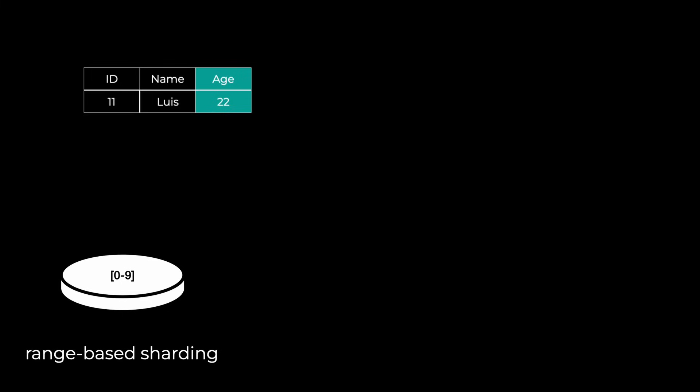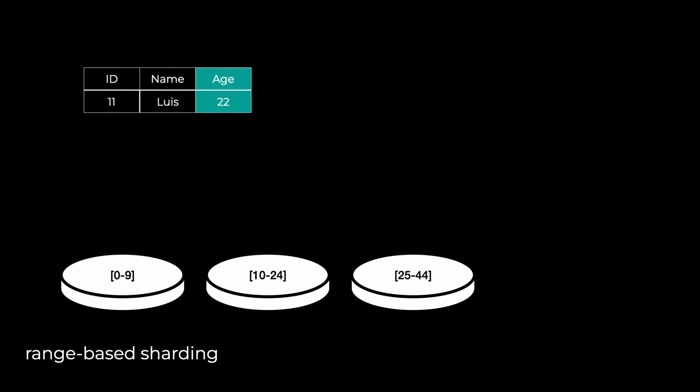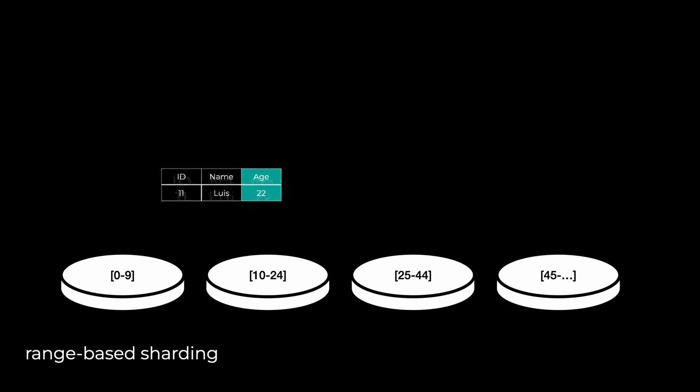For example, based on age: 0 to 10 lives on one shard, 10 to 25 on another, 25 to 45 on another, and so on. Or you could shard a clients table based on the first letter of the client's name — A to J on one shard, K to Z on another. The problem is that this approach is quite blind. You don't know if you'll get an uneven distribution, since you don't know beforehand if more clients will have names starting with A — historically, companies picked names starting with A to appear first in phone books.